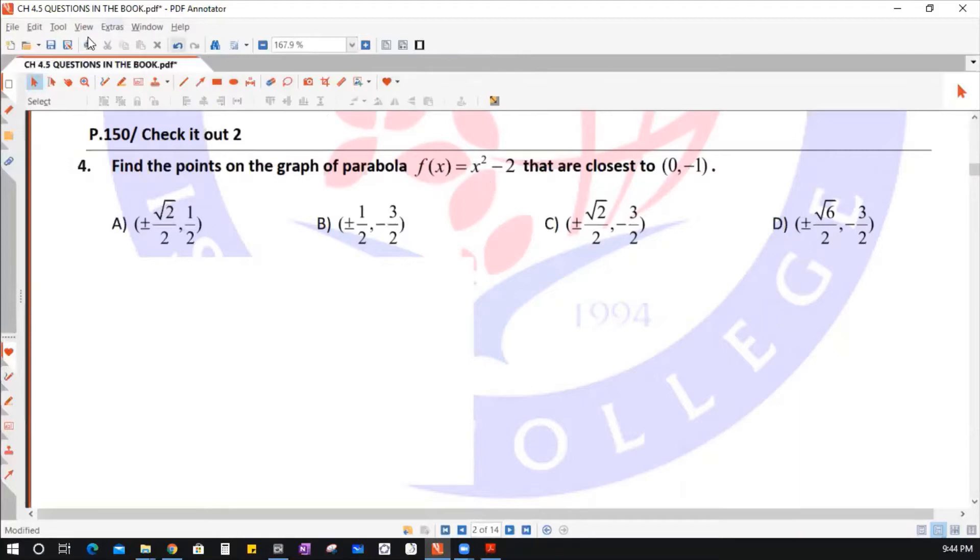Again, we have a parabola and the question is asking the points on the parabola which has the closest distance to the given point (0, -1). Suppose that (x, y) is a point on the parabola and this is the distance s between the point (x, y) and (0, -1).